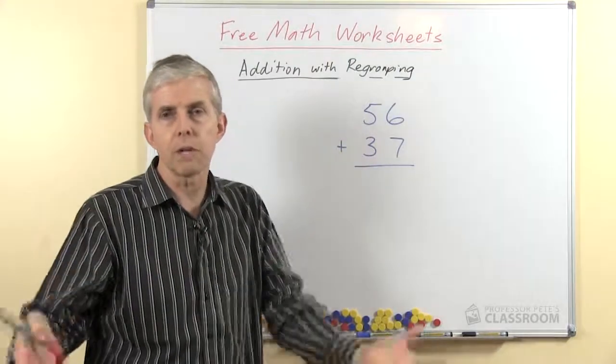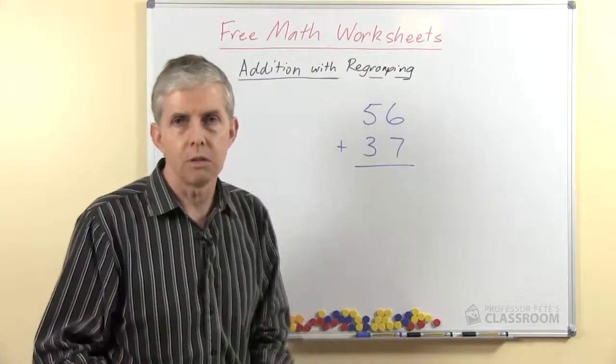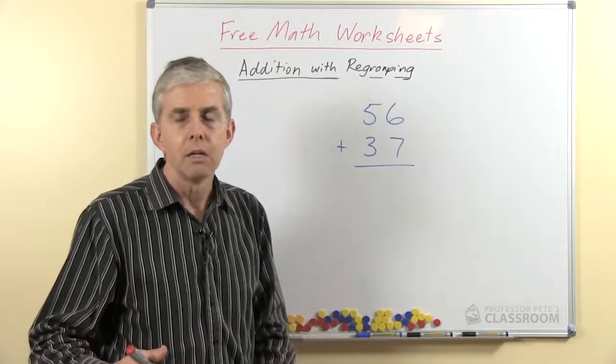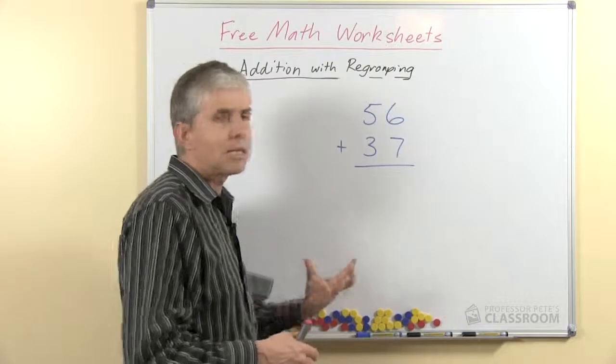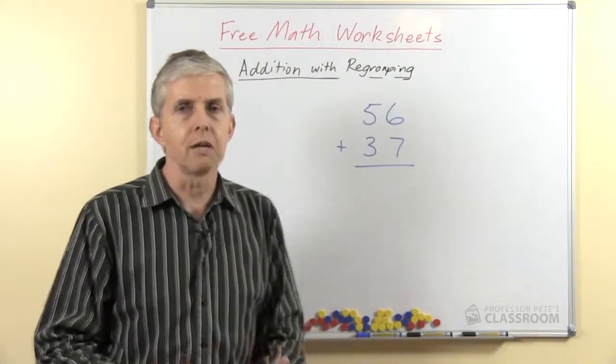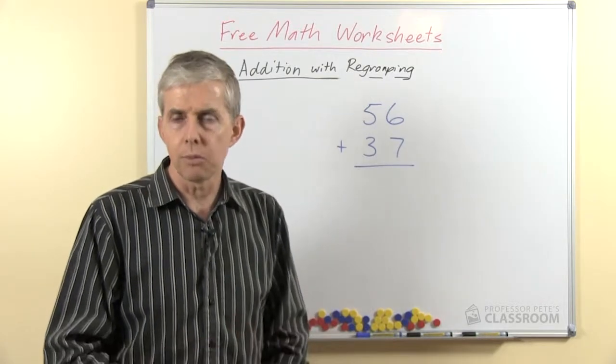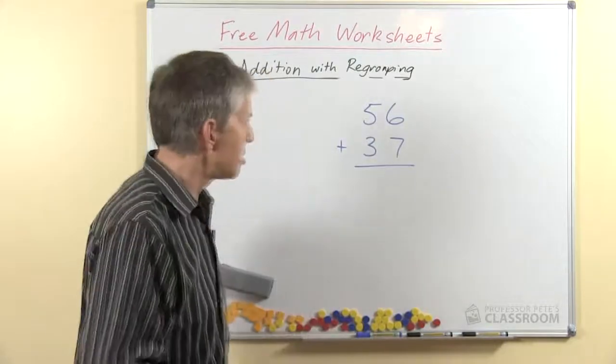When it's number facts like 3 plus 6 we want the students to just go that's 9 because they've memorized it. But when we get here we're getting to a question where the numbers are too big and we wouldn't expect anyone to memorize, so there's a multi-step process to carry out. The prerequisites here of course are that students have learned their number facts and that they understand what the operation is and what it means and how we use it in everyday life.